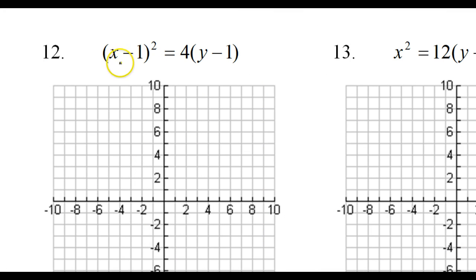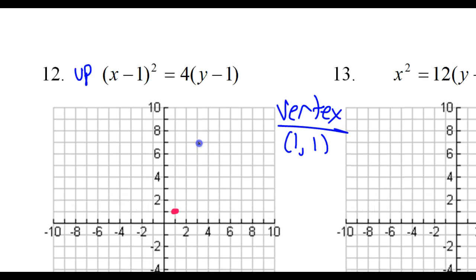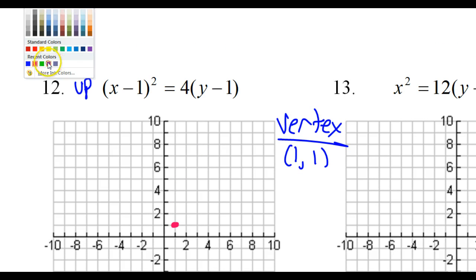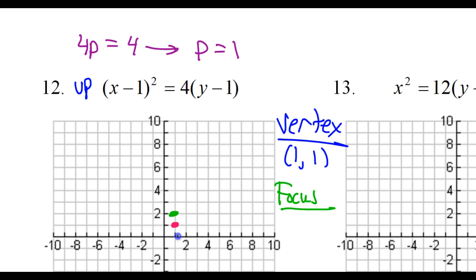A few more examples. The x is squared, so I know it'll be up or down. Because the 4 is positive, I'm thinking up. The vertex is going to come from here — opposite, opposite — so this is going to be 1 comma 1. Now time to find the p value: 4p is going to equal 4, which means p is going to equal 1 once you divide. So that 1 tells me to go 1 up for the focus — the focus is 1 comma 2.